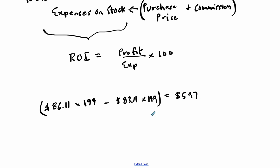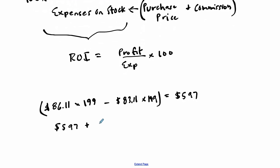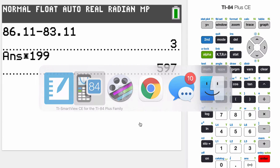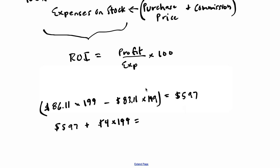And then we also want to include the dividends. So it's $597 plus, what did we get? $4 per share. So $4 for each of the 199 shares. We'll put that together to find essentially our total profit. So it's $597 plus $4 times 199, $1393. Let's enter that in. So $1393. This is our profit right here.